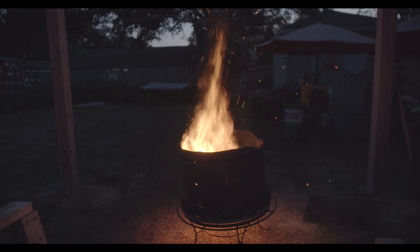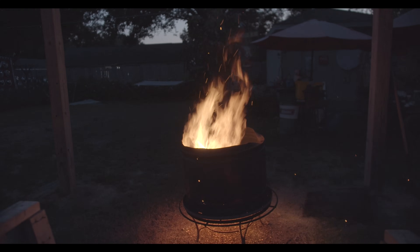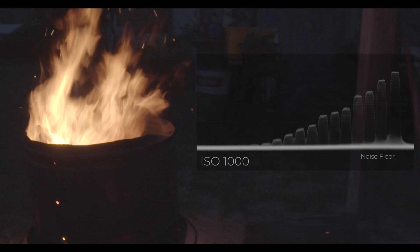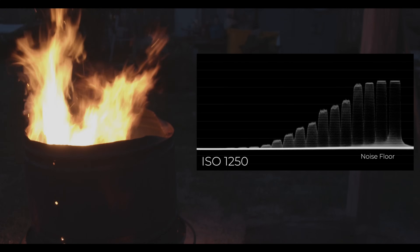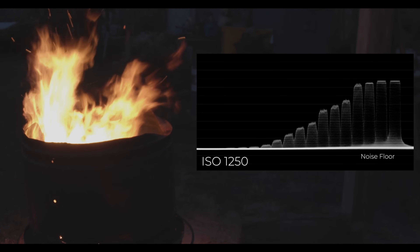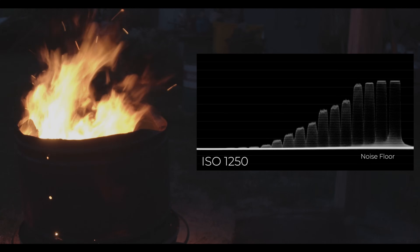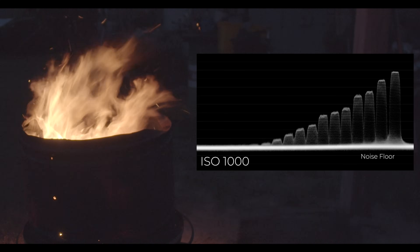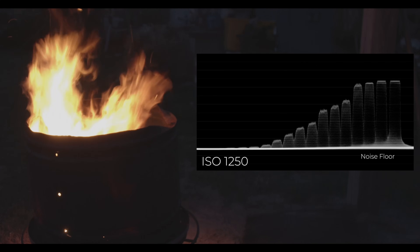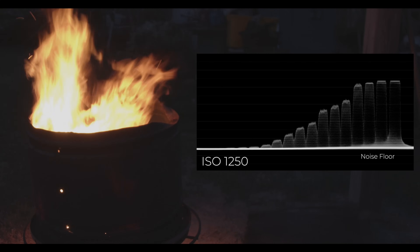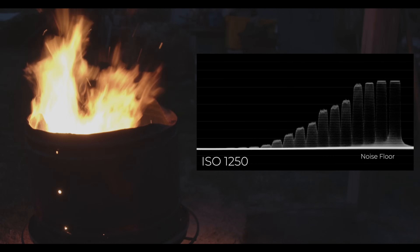For this example shot I'm toggling back and forth from ISO 1000 and 1250, and we can clearly see the highlight detail clipping, and also the shadow noise becoming cleaner and more noisy.